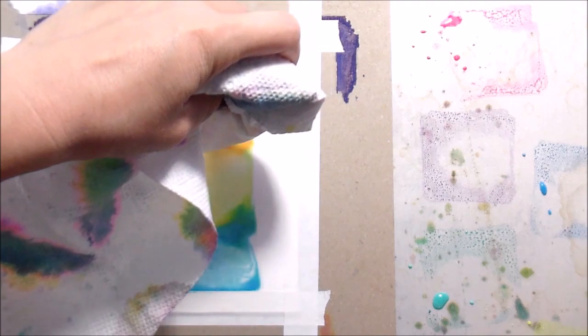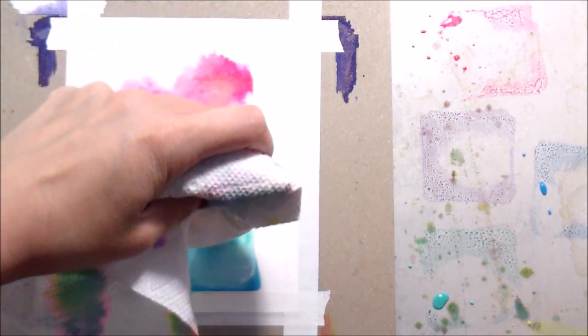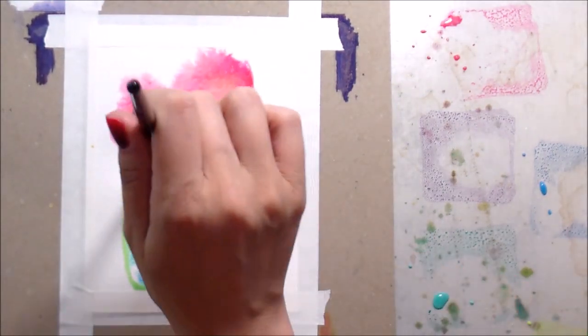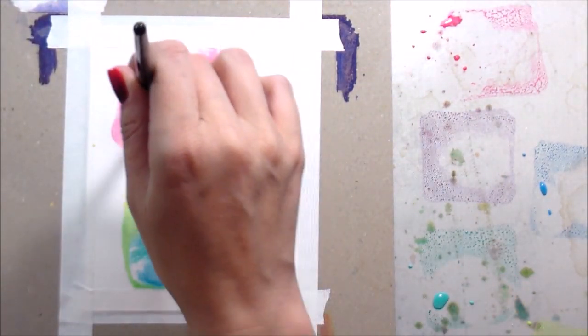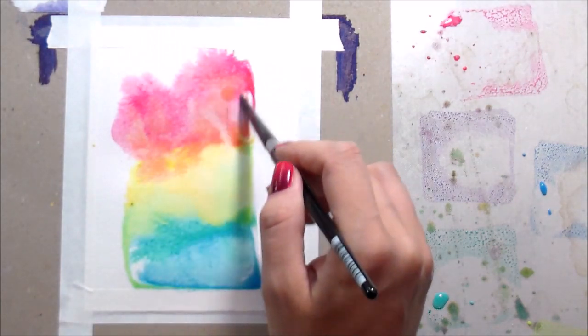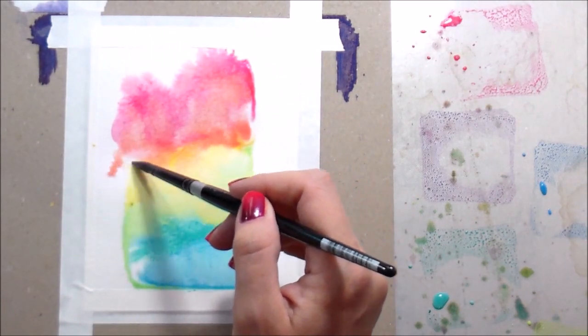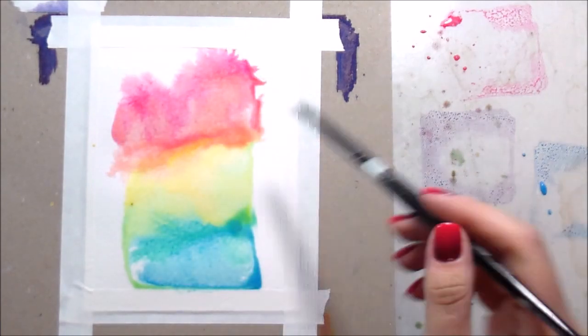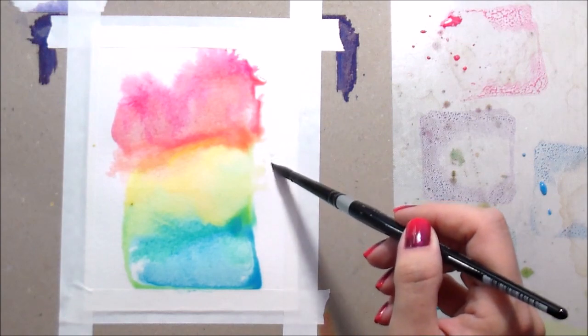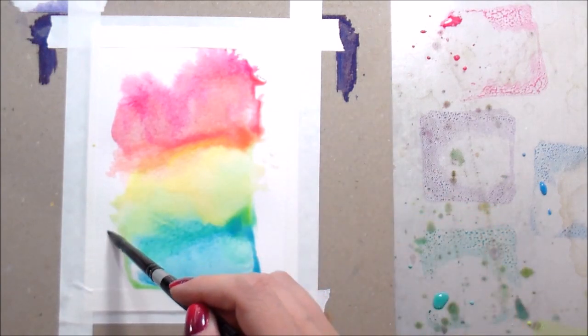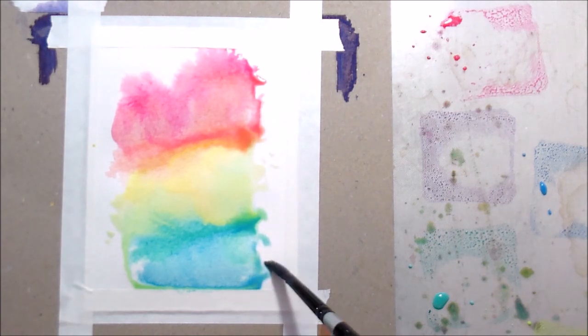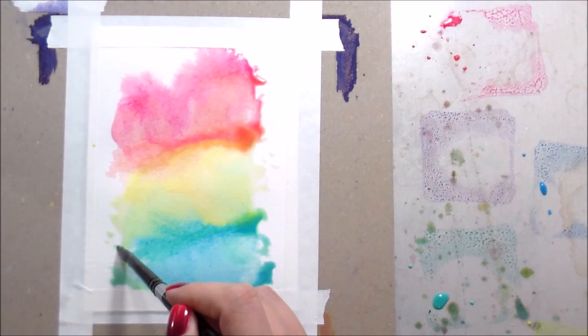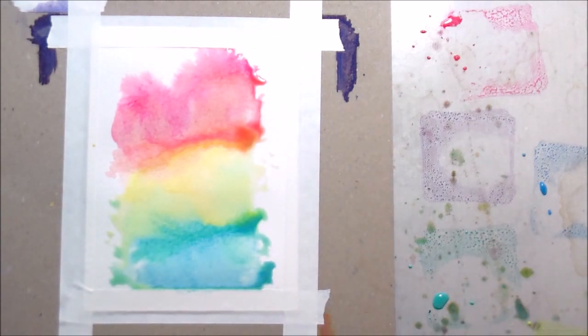If you start to get some pooling like I did here, you can just go in with a paper towel and blot up the extra water. You may have to go back in and add more pigment. Because of the way I put down the water, it's only going to spread to where the paper is wet. The dry paper acts as a barrier, but it gave me manufactured lines and I wanted something more organic.